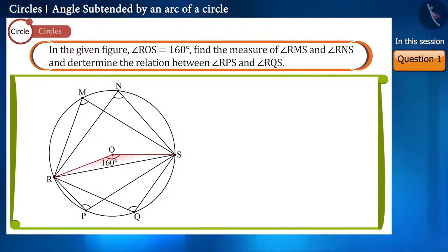That is, the angle ROS will be equal to twice the angle RMS and the angle RNS, which we can write like this. And we consider it as equation 1 and equation 2.